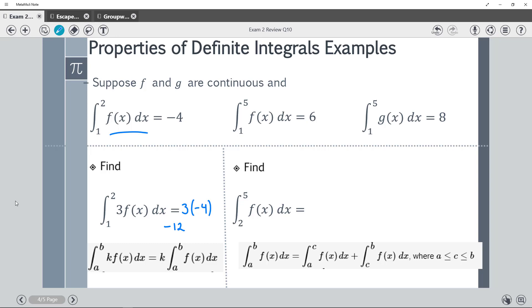f(x) from 2 to 5. Well, I don't see a 2 to 5. However, I think maybe I could use from 1 to 5. So think about this. If you're going from 1 to 5, and you subtracted out the 1 to 2 piece, wouldn't that be your 2 to 5? Looks like it is.